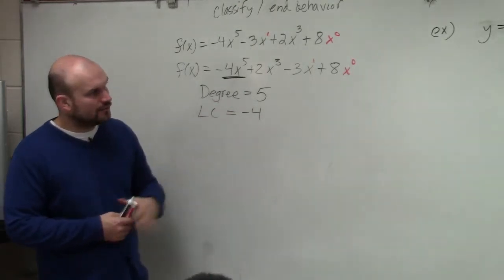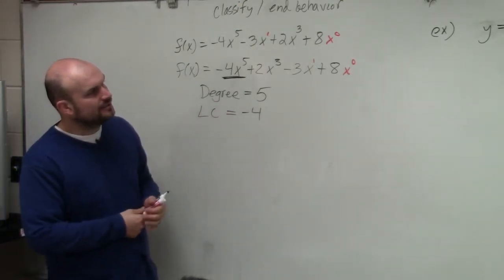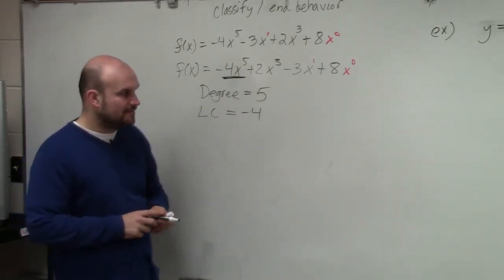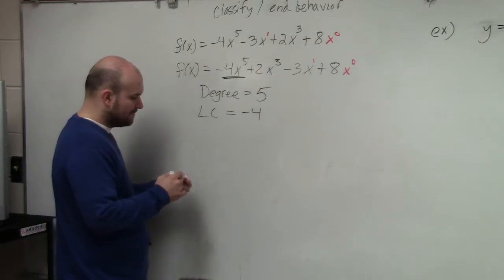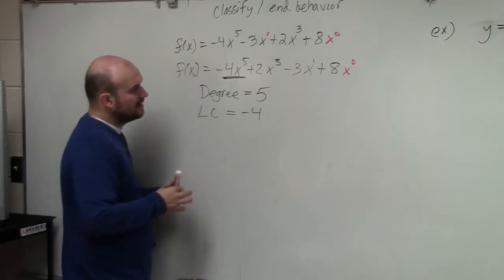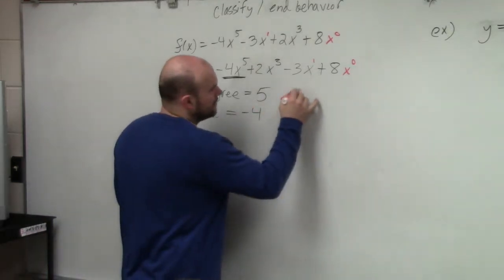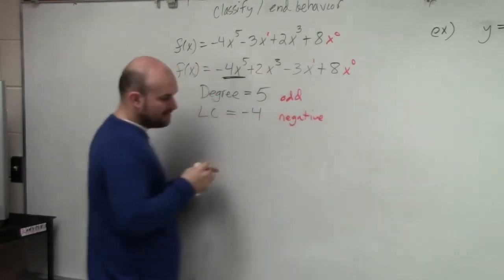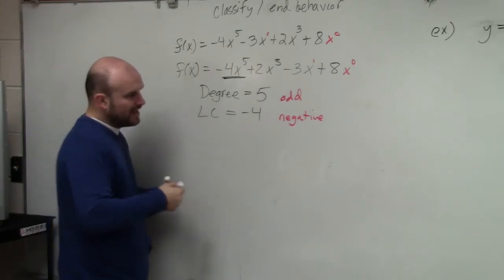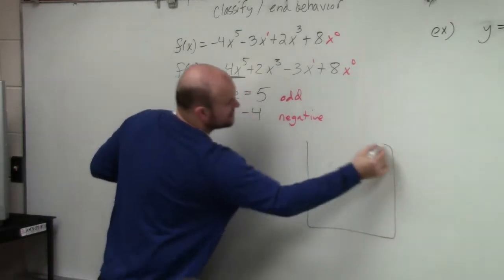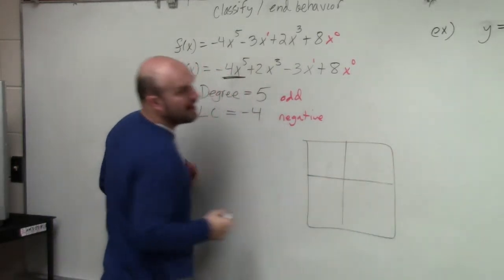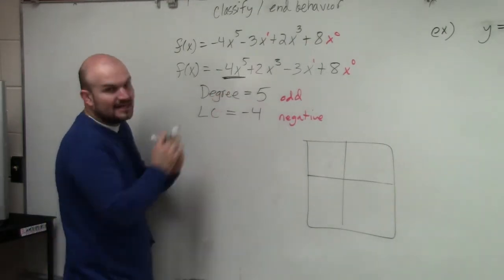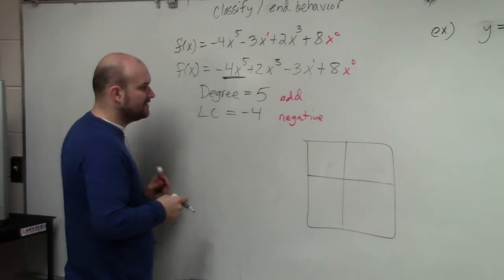Well, we do, but we're not going to go over what to do with that. Now, let's go and determine end behavior. Since my degree is odd, and my leading coefficient is negative, if you guys remember, if you have your notes, you guys should have a nice little box that looks like this. And what I did was I gave you four options for end behavior. When you have an odd degree and a negative leading coefficient.